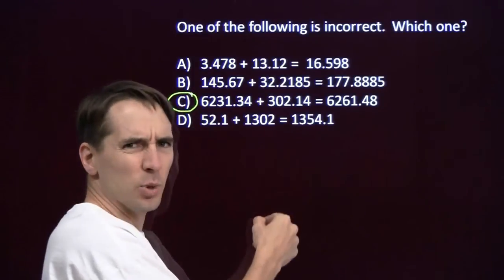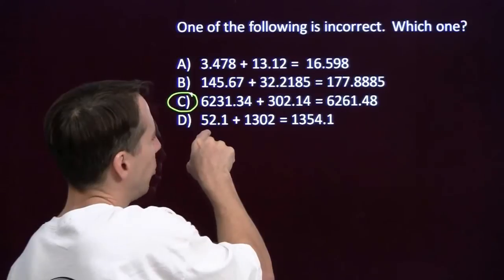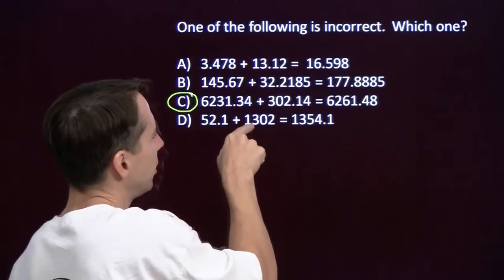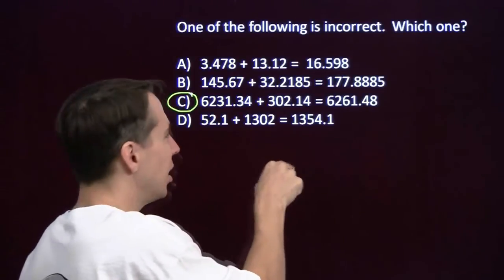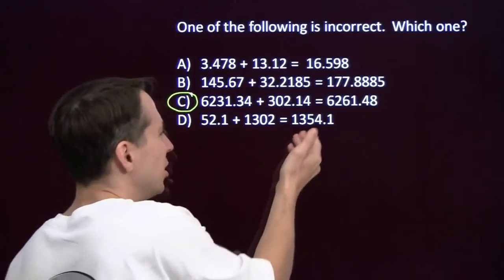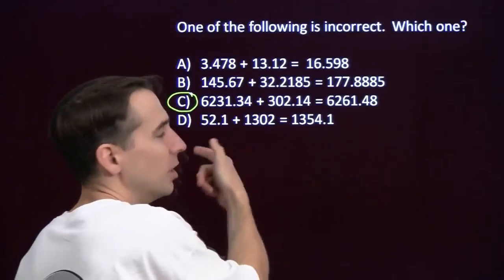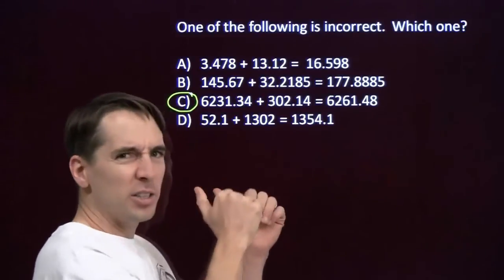Go ahead and check the last one just in case. I've got a number that's a little more than 50, and a number that's a little more than 1,300. I should get a sum that's a little more than 1,350. Sure enough, that's what I get.